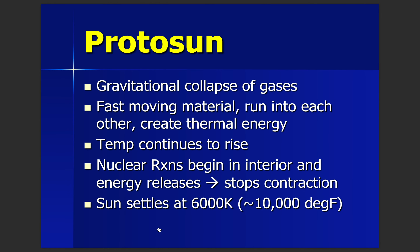The protosun is a pre-sun, occurring because of the gravitational collapse of gas. Fast-moving material runs into each other, heats up, and creates thermal energy. As gas particles get clumped closer together, they hit each other more, creating more thermal energy and causing the temperature to rise inside the protosun. Nuclear reactions begin in the interior once it gets hot enough. Gravity continually collapses the protosun until nuclear reactions happen; those reactions then push out against gravity and stop the contraction, allowing the star to settle at its size.